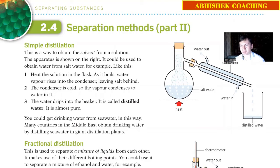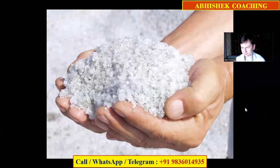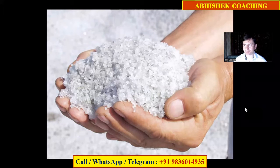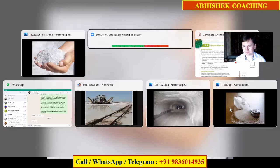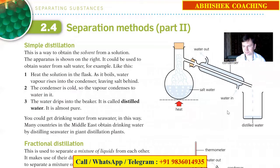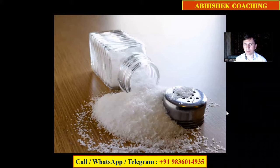You probably know ordinary table salt and the refined one. Let's look at the pictures. Ordinary table salt may be of a greyish tone, while the refined one is always snow white, as you can see in the picture. What do you think? How have those two types of table salt been obtained?